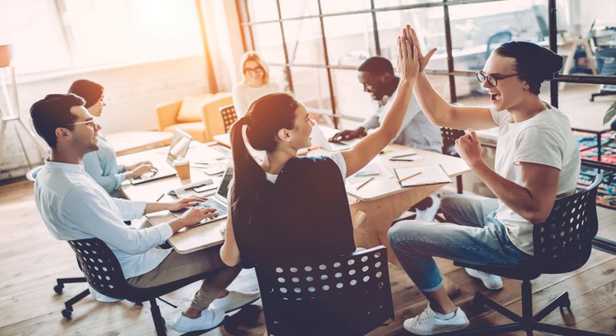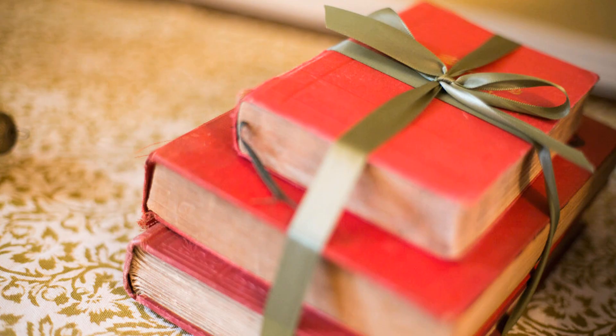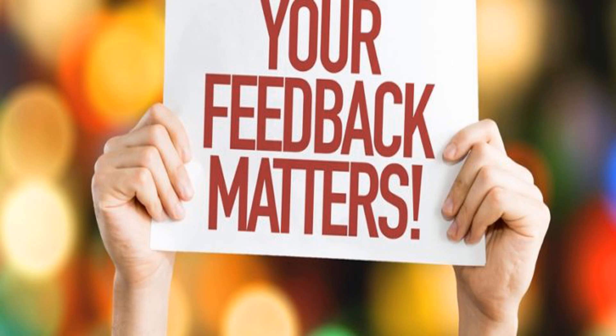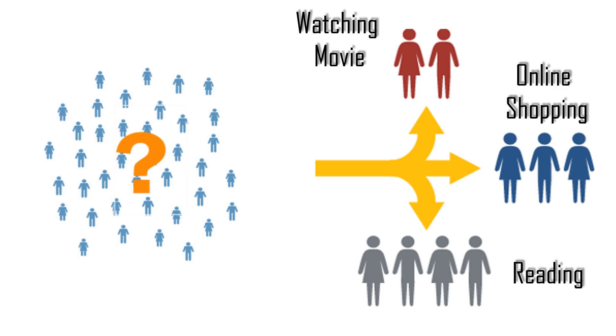Suppose we have a startup with 100 employees and we want to distribute gifts. Last year, we gave one type of gift — a book — to all employees. We recently took a survey asking if they liked the gift or had suggestions. By looking at the survey, we found that some people like reading books, some like online shopping, and some like going to a movie. So we got three clusters among all employees, and distributed gifts this year based on those clusters. That's how clustering works.